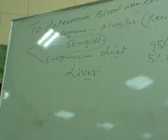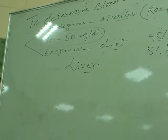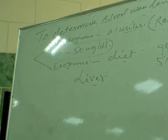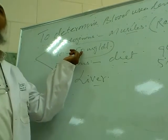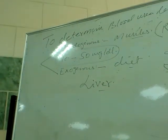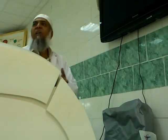This normal range of urea varies according to different conditions. For example, it varies according to the protein content of the diet. People whose diet contains mainly protein substances will have a higher urea level compared to those who eat vegetables. So vegetarians will have a lower urea level than meat eaters.